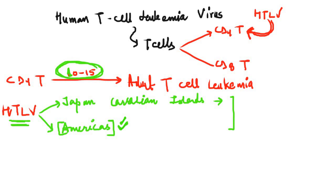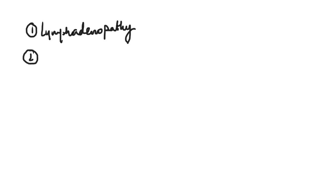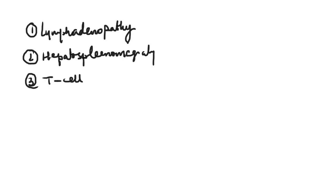Now we'll talk about the clinical findings associated with adult T-cell leukemia. Like other leukemias, in this T-cell leukemia there will be lymphadenopathy — meaning enlargement of the lymph nodes — as well as hepatomegaly and splenomegaly. What is important to recognize in T-cell leukemias, and what hints that it is a T-cell leukemia, is that there are skin lesions. There may be skin rashes, skin plaques, or other skin findings.